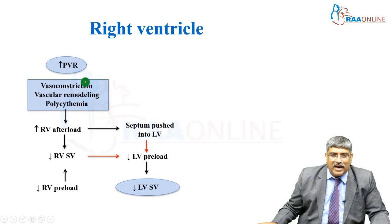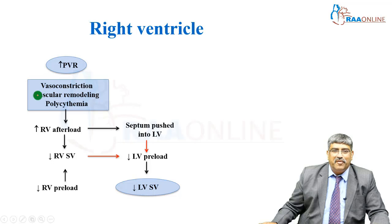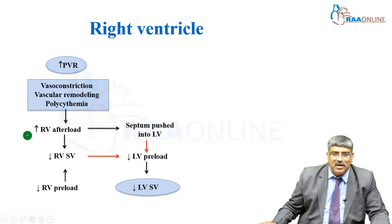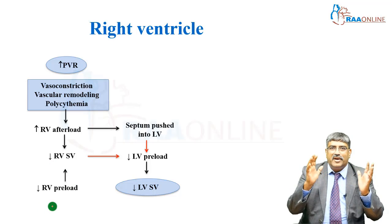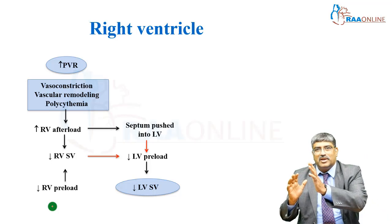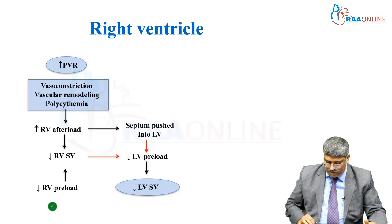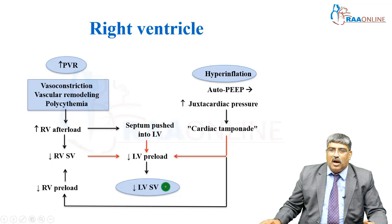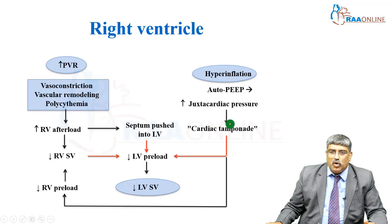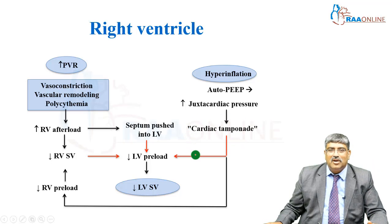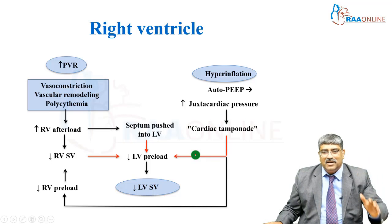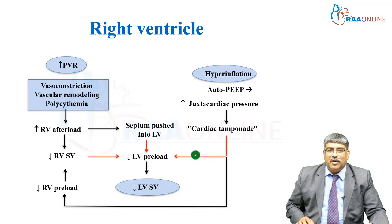Coming to the right ventricle, there is going to be increased PVR which increases right ventricle afterload, and right ventricle preload comes down. The right ventricle is enlarged and pushes into the left ventricle, which compromises the left ventricle also. There is auto-PEEP which increases juxtacardiac pressure, leading to cardiac tamponade, which can also affect left ventricle preload.